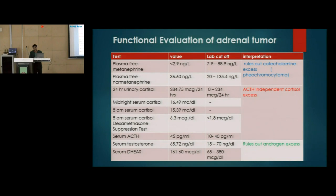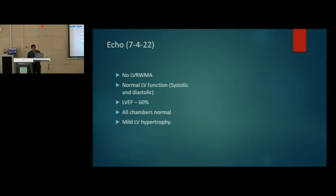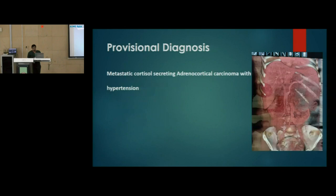With this, we had the diagnosis of cortisol-secreting adrenocortical carcinoma in mind. Since the patient had history of cerebrovascular accident four years back, we performed an MRI brain. It showed three enhancing lesions involving the diploic spaces of bilateral parietal bone and left frontal bone, suggestive of calvarial metastasis. There were also chronic lacunar infarcts in the right basal ganglia and foci of microbleed secondary to long-standing hypertension. A bone scan was not suggestive of any bony metastasis, and pre-op 2D echo was normal.